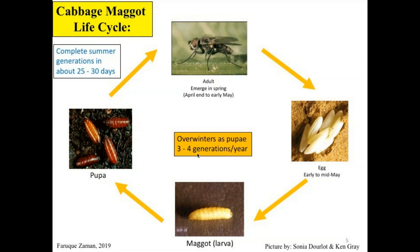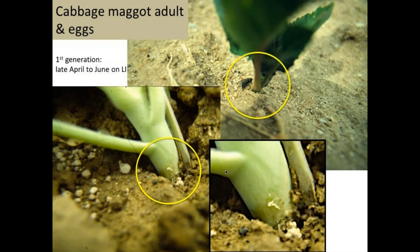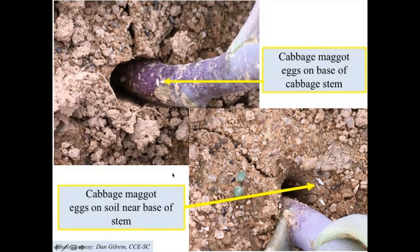It may be different in different parts of the region — generally in the northeast it's three to four generations per year. The female lays eggs on the base near the stem at the soil line, or on the loose soil around the stem. The eggs are very small, like half the size of a rice grain, but you can see them with the naked eye with close inspection. That can be used as a scouting process if you watch carefully around the soil or on the stem.